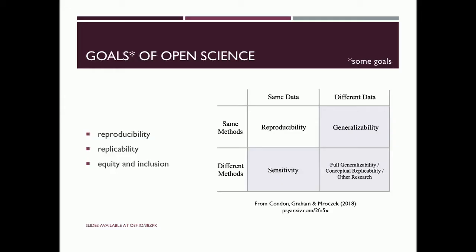Before I start, this summer Tal Yarkoni wrote a blog post called 'I Hate Open Science' — a very good post with a very provocative title. It turns out Tal did not hate open science; he hated the term open science. He said this label gets applied to many different things, including reproducibility, replicability, equity and inclusivity, data sharing, transparency, and diversity. With that, the goals of open science I'm particularly interested in today are three: reproducibility, replicability, and equity and inclusion.